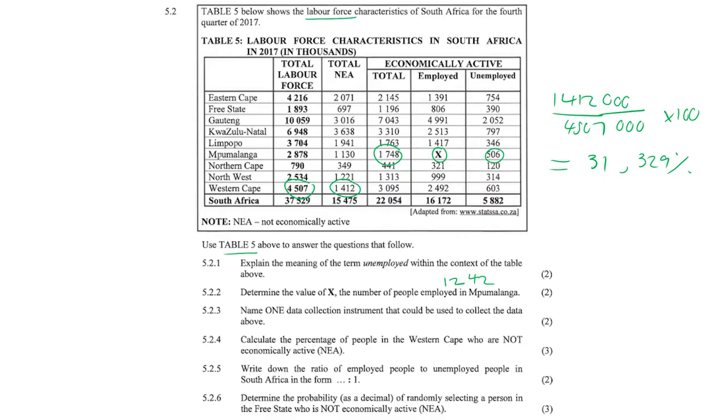Question 5.2.5: Write down the ratio of employed people to unemployed people in South Africa in the form blank to 1. We need to find that value.